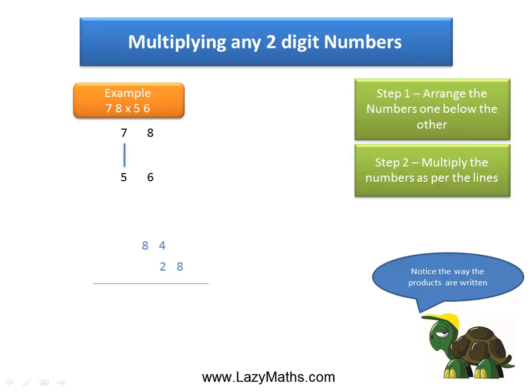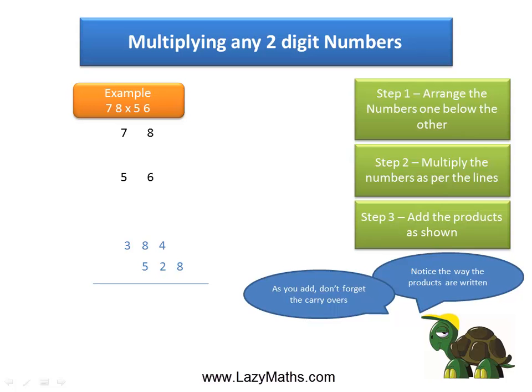The last step is to multiply 7 with 5, and 7 times 5 is 35. We write 35 in the same exact manner with 3 as the carryover. And now we simply add these numbers together.